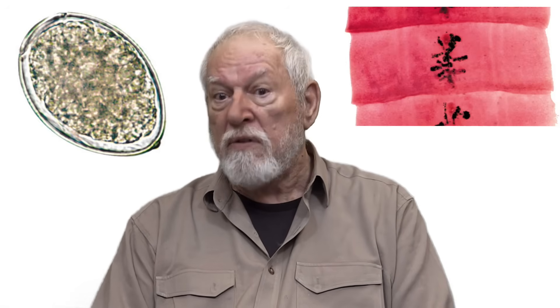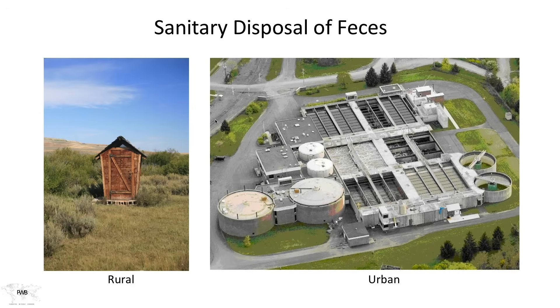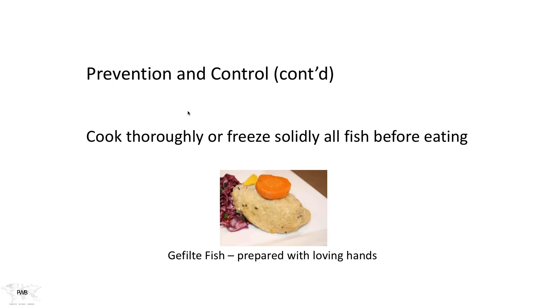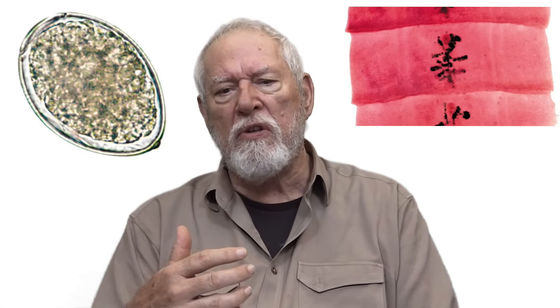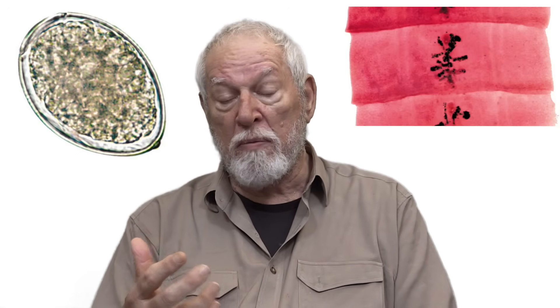Preventing and controlling infection with Diphyllobothrium involves sanitary disposal of feces in both rural and urban settings, and cooking or freezing solidly all fish before eating. The reason Robert Desowitz wrote about Jewish grandmothers in his book about parasite acquisition is that one of his chapters was entitled 'Jewish Grandmothers.' In many households — particularly Jewish households — certain holidays were celebrated with traditional dishes, one of which is gefilte fish.